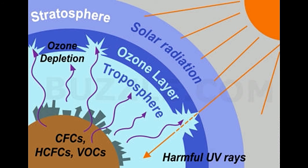Causes of ozone depletion: Ozone is a triatomic form of oxygen (O3) found in the Earth's atmosphere. A combination of low temperatures, elevated chlorine, and bromine concentrations in the upper stratosphere are responsible for the destruction of ozone. The production and emission of chlorofluorocarbons (CFCs) is the leading cause of ozone layer depletion. CFCs account for almost 80% of the total depletion of ozone.